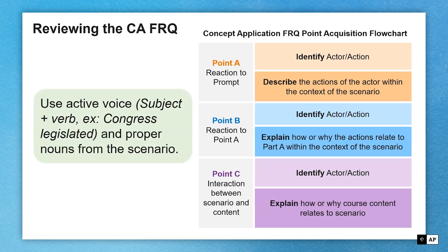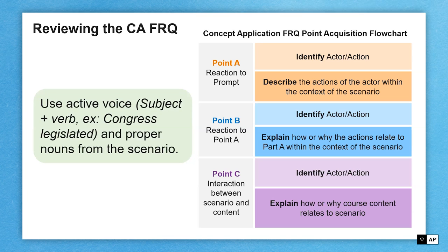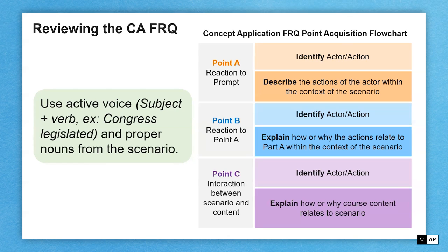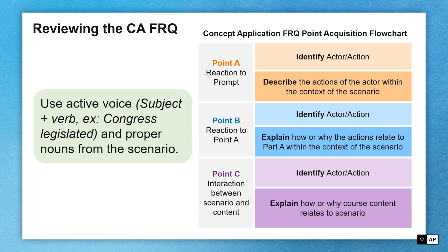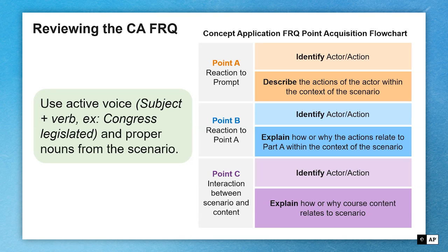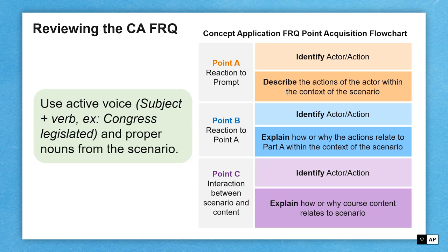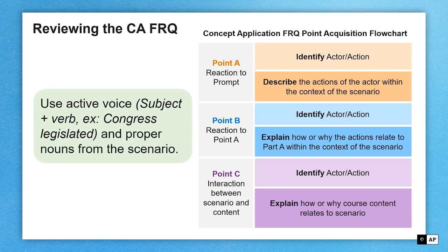I recommend that as you're writing, you use active voice. Touching back to your English class, that's when you provide the subject like Congress and the verb like legislated as you talk about whatever is in response to the prompt. That allows for a very clear understanding of who is doing what. My other suggestion is to use proper nouns. If there are proper nouns in the scenario, you should reach up and pull them down to show mastery of the content.